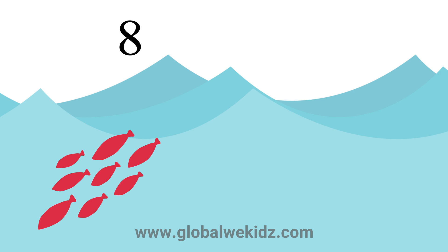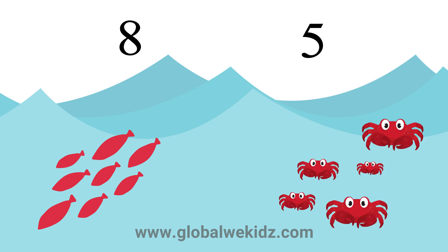There are eight fishes on the left and five crabs on the right. Are they equal or not equal? Yes, correct! They are not equal.